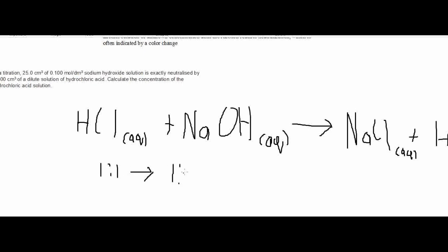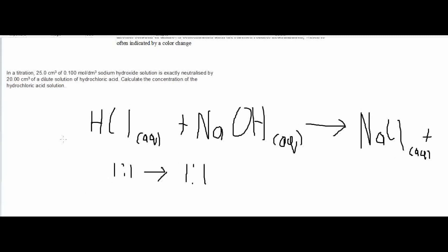The number of moles of sodium hydroxide must equal the number of moles of hydrochloric acid and vice versa. Now we need to know the concentration of the hydrochloric acid. We know the volume, now we need to know how many moles. So we're going to calculate first the number of moles of the sodium hydroxide.